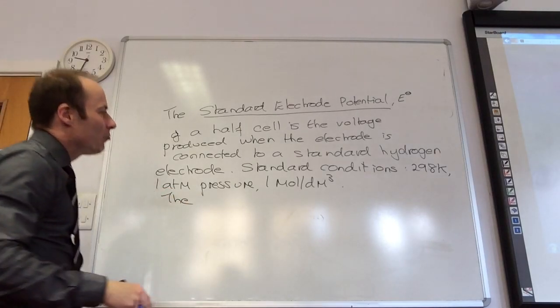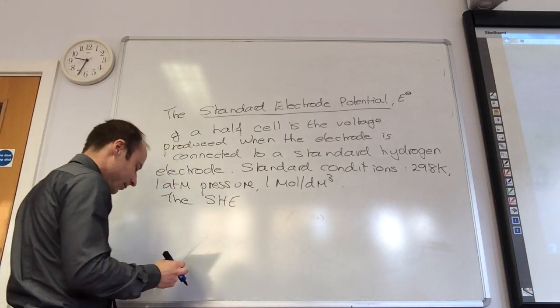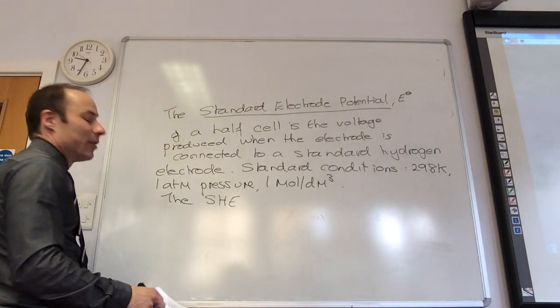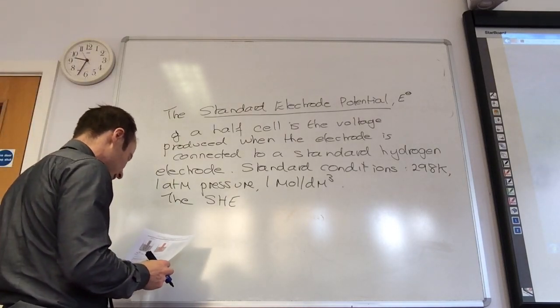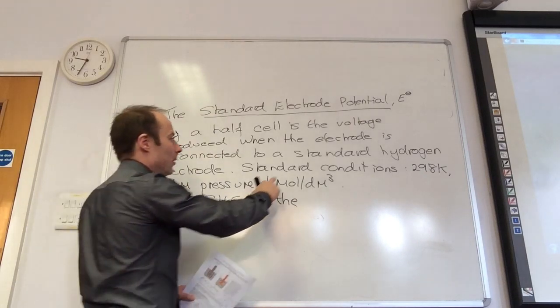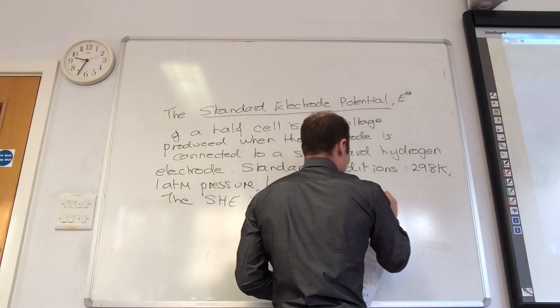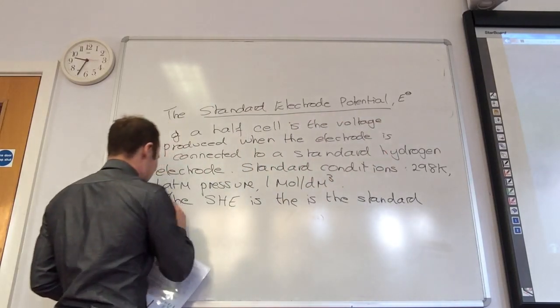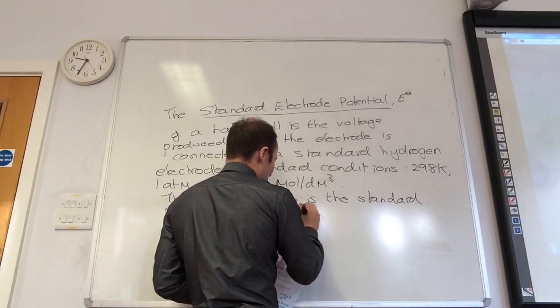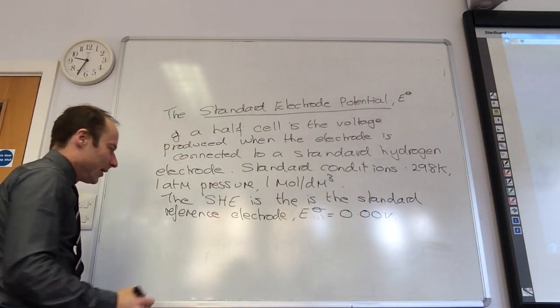Now rather than write standard hydrogen electrode, are you happy if I just put SHE? That's what it's actually called, the standard hydrogen electrode. Is there a sign for it like the E° one? No. The standard hydrogen electrode, and E° for that one is equal to 0.00 volts.